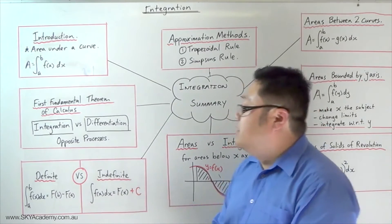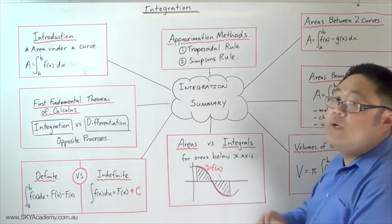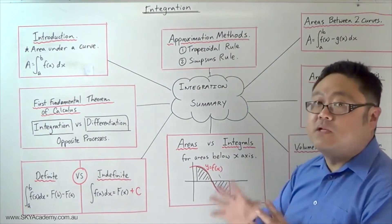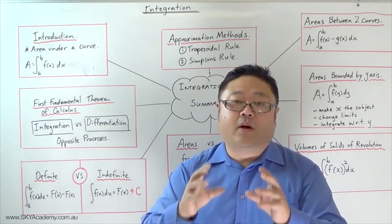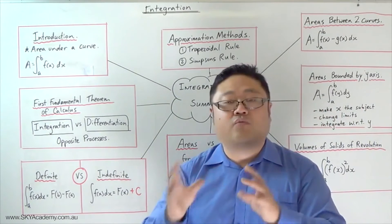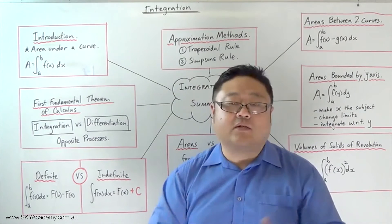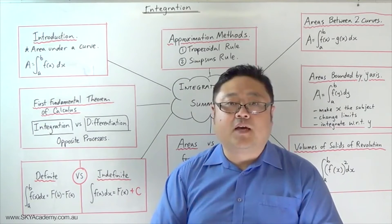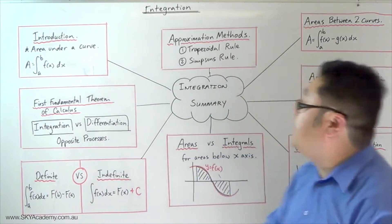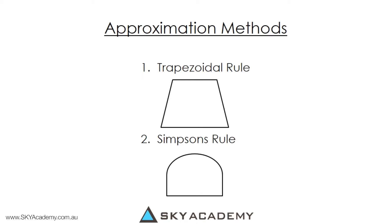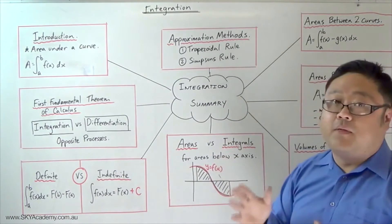The next thing that we did was we looked at approximation methods or approximation techniques for finding the area under a curve where a curve could not really be integrated or it wasn't practical to integrate. The two approximation methods we looked at were the trapezoidal rule and Simpson's rule. There are formulas that go with that, but I haven't put that up on the board.